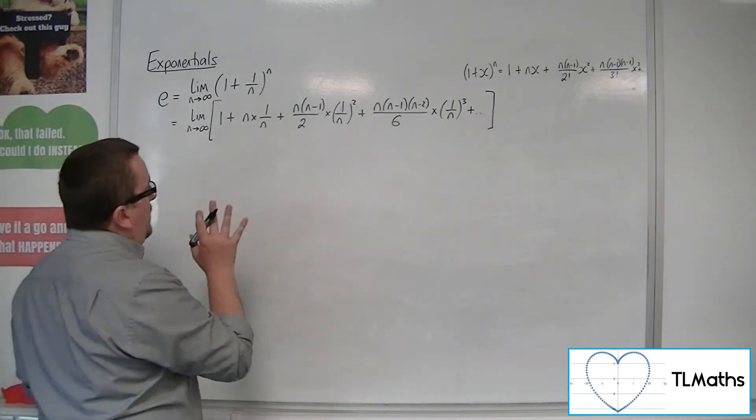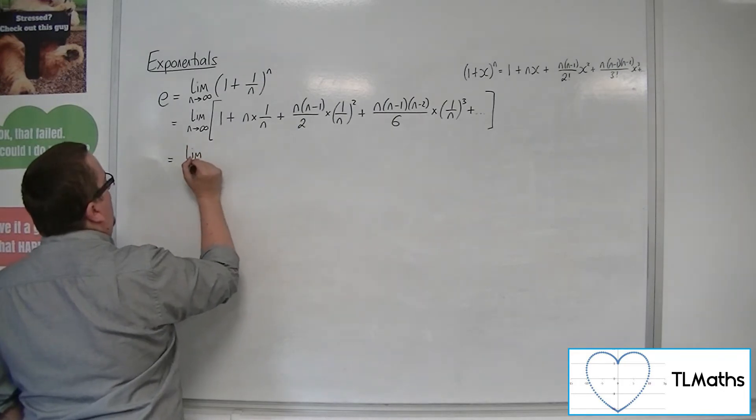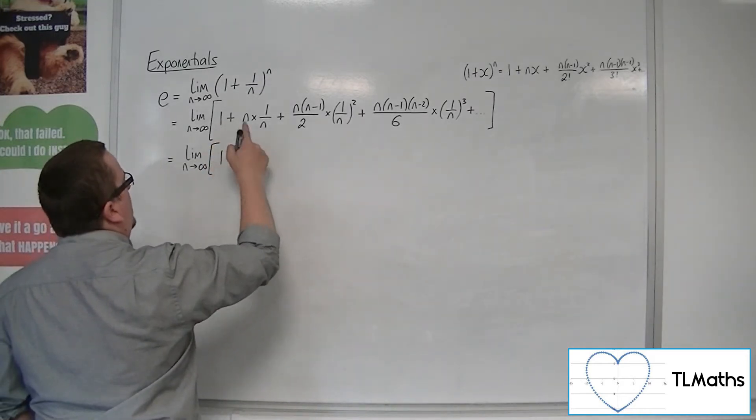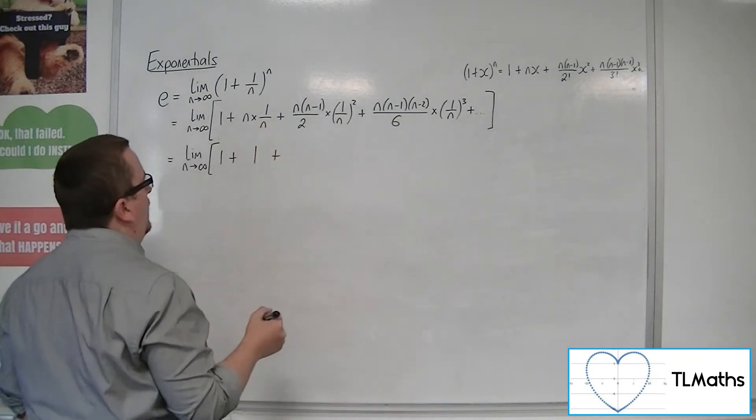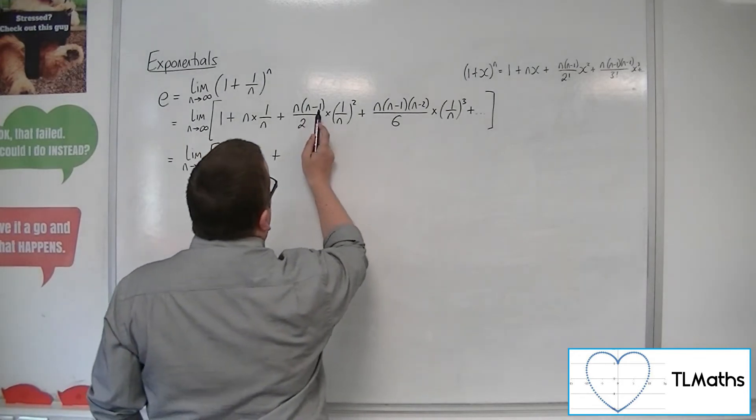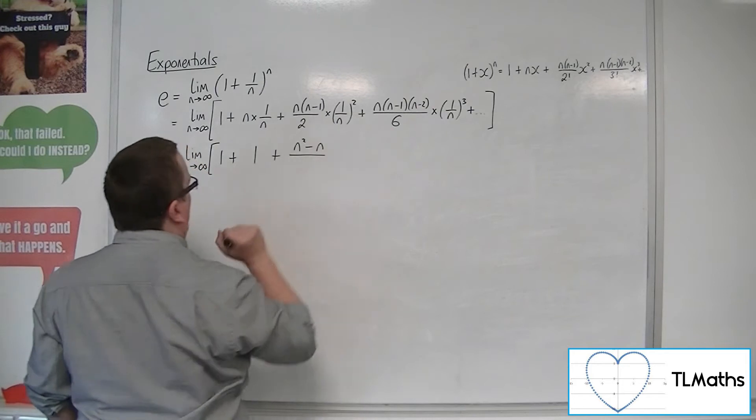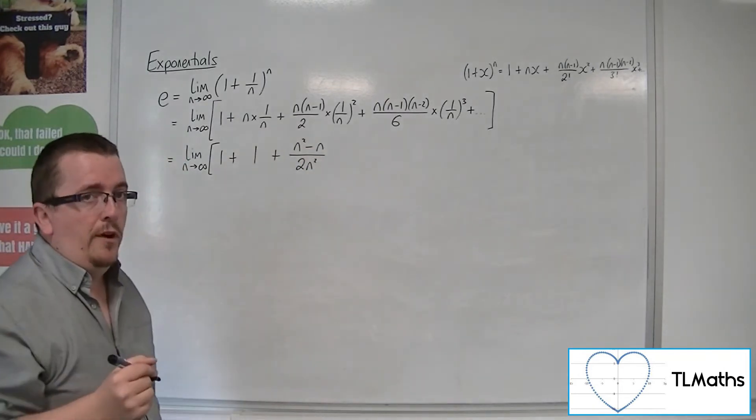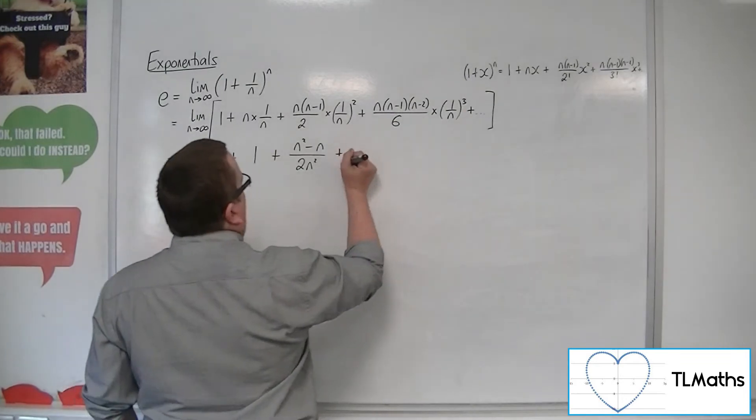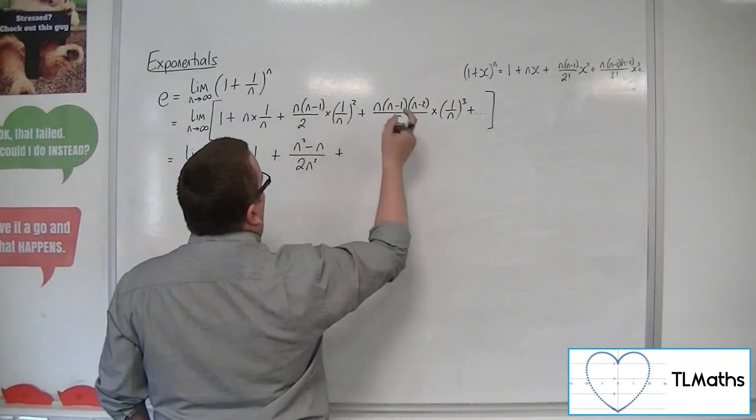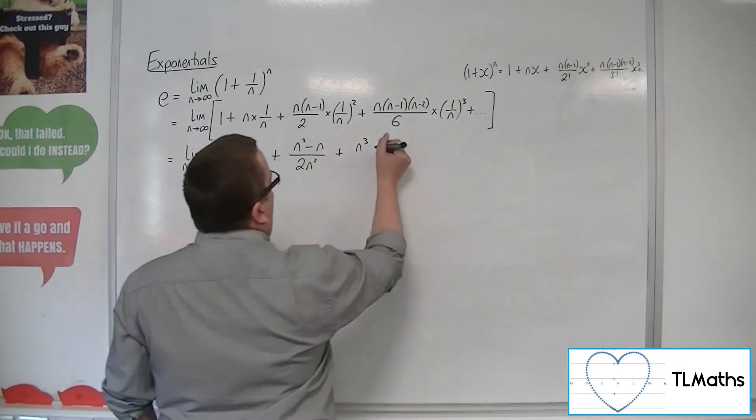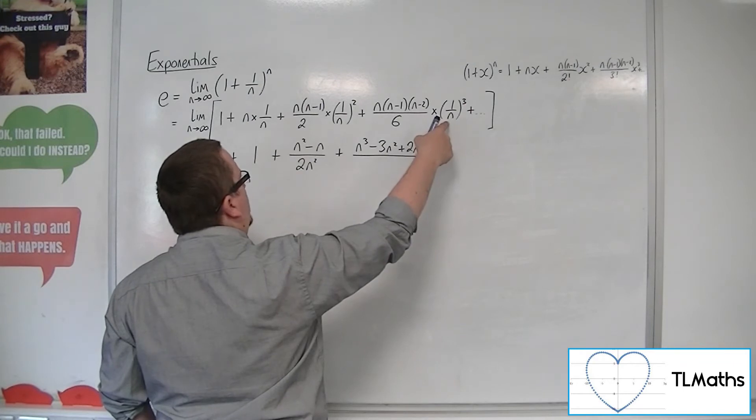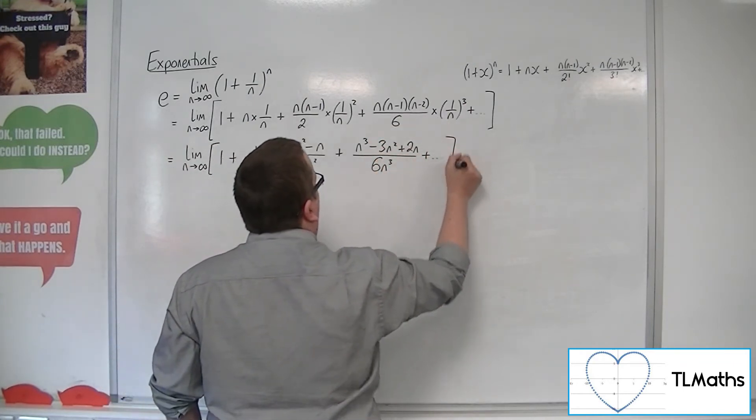So what we want to do is we want to simplify this. We're going to keep that limit outside the big bracket, and let's simplify. So, we've got 1 plus n times 1 over n, well, that's just 1, plus we've got n times n minus 1, so n squared minus n, all over 2n squared when that simplifies. Now, over here, we've got n times n minus 1 times n minus 2, so, expanding that numerator, we would have n cubed, we'd have minus 3n squared, and then plus 2n. In the denominator, because we've got that 1 over n cubed, we'd have 6n cubed, plus all those other terms.